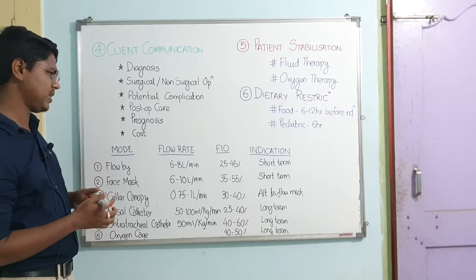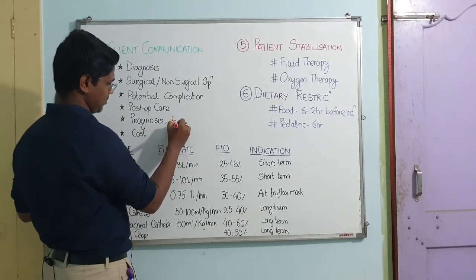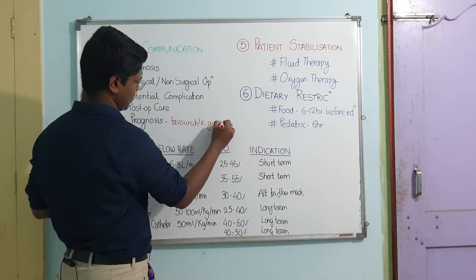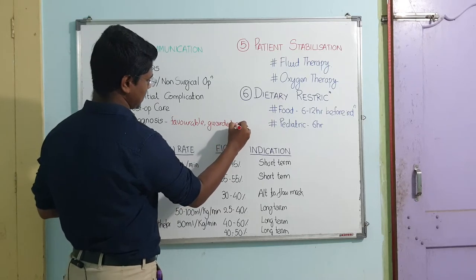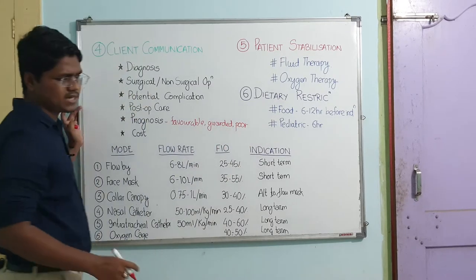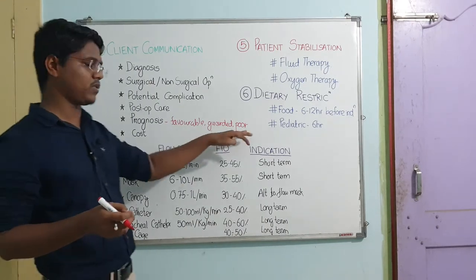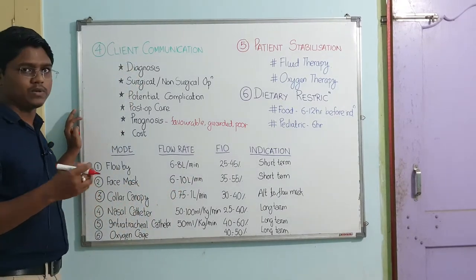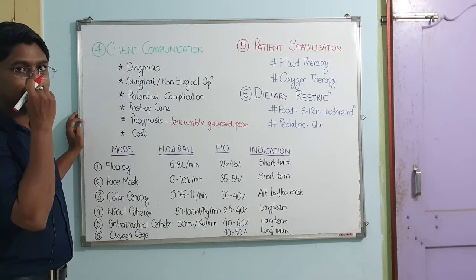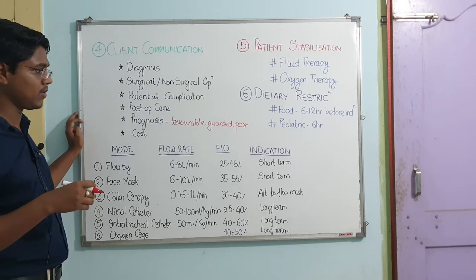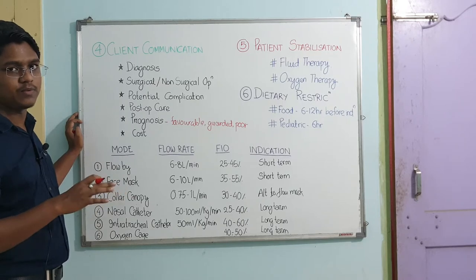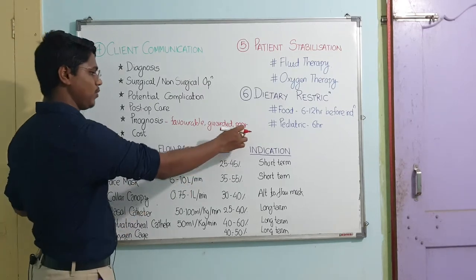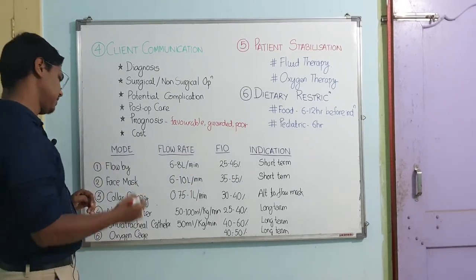Next, discuss prognosis — whether it is favorable, guarded, or poor. For example, a uterine rupture case presented after 24 hours — the prognosis is poor most of the time. In third-degree cases presenting after 48 to 72 hours where the animal has developed anorexia, it will most of the time be guarded or even poor prognosis. So you have to tell your owner about the prognosis. This is very important.